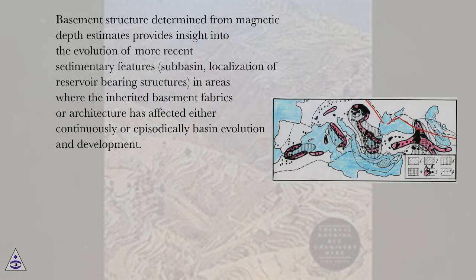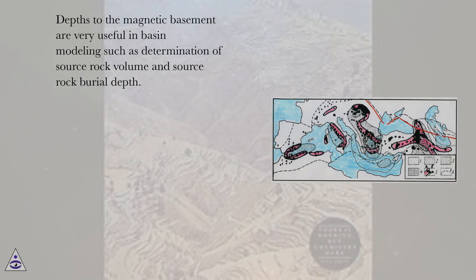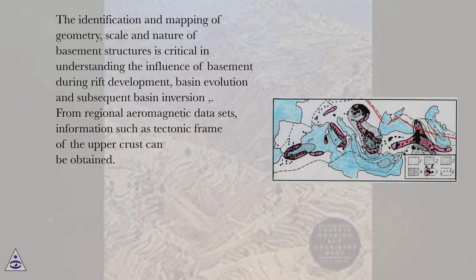Basement structure determined from magnetic depth estimates provides insight into the evolution of more recent sedimentary features, sub-basin localization of reservoir-bearing structures, in areas where the inherited basement fabrics or architecture has affected either continuously or episodically basin evolution and development. Depths to the magnetic basement are very useful in basin modeling such as determination of source rock volume and source rock burial depth. The identification and mapping of geometry, scale and nature of basement structures is critical in understanding the influence of basement during rift development, basin evolution and subsequent basin inversion.